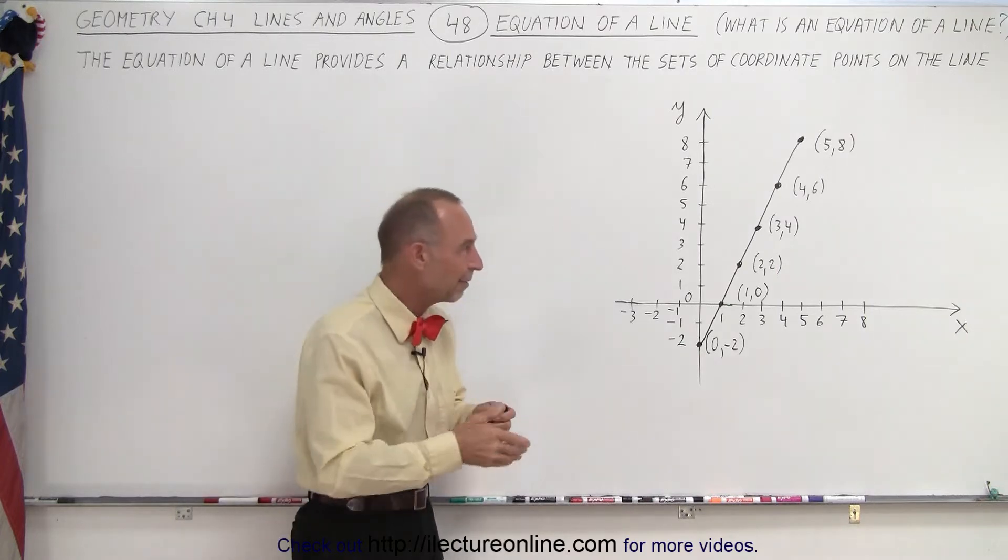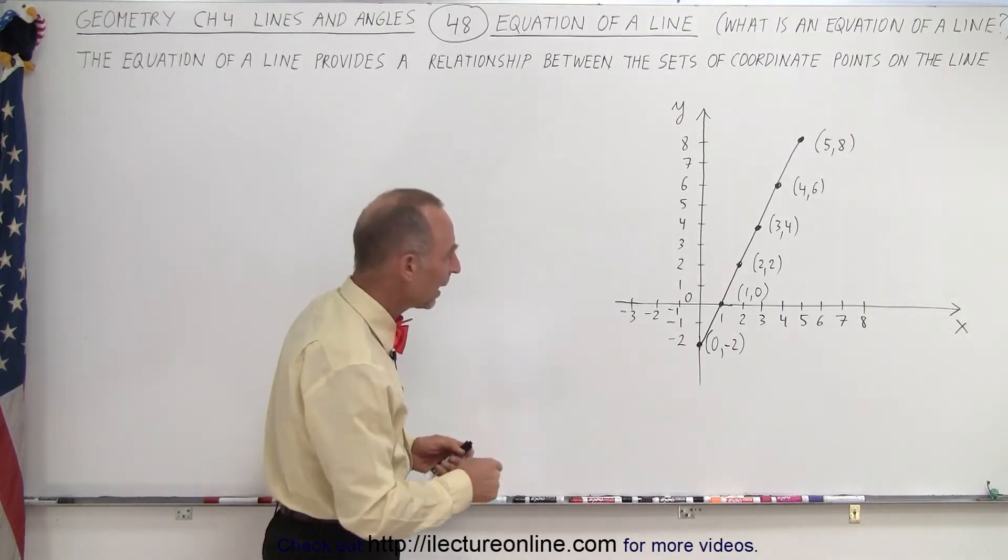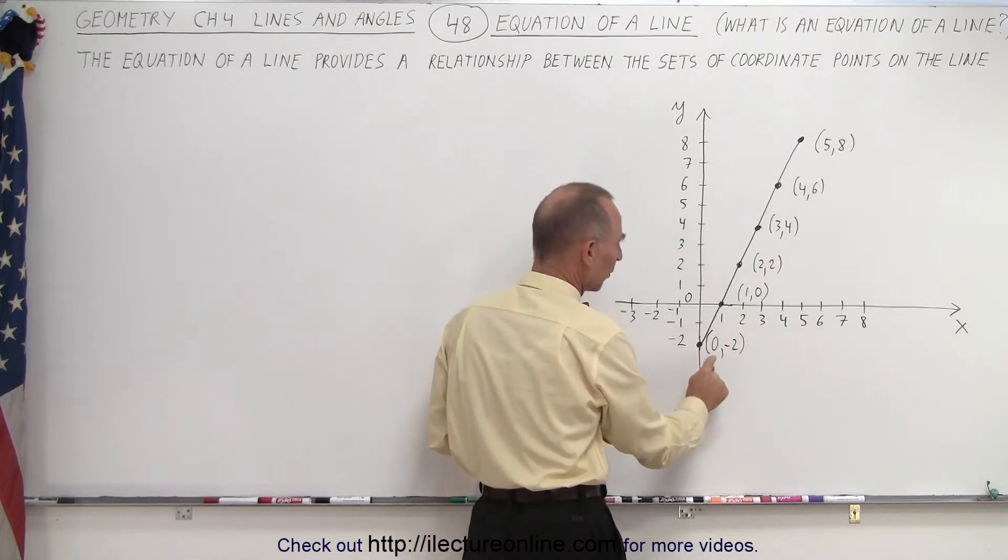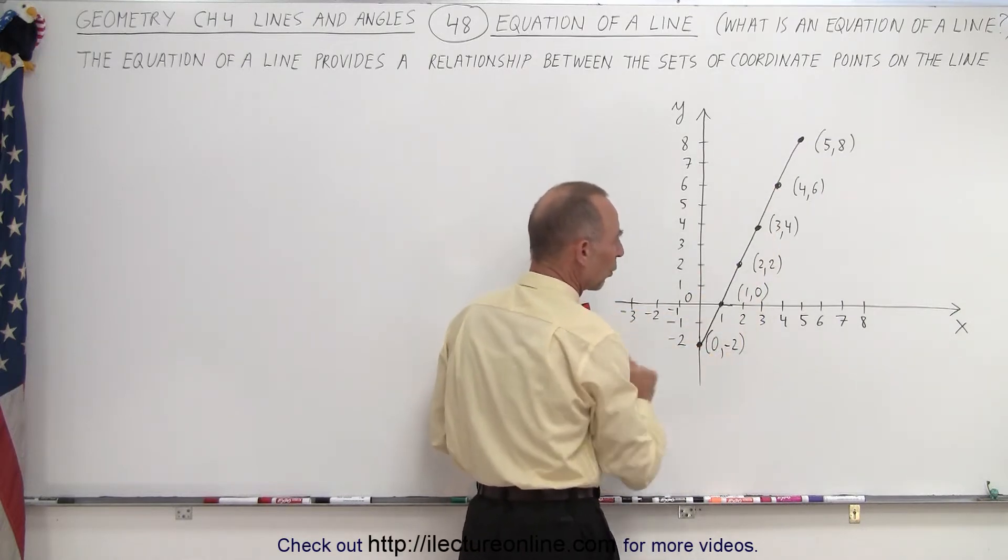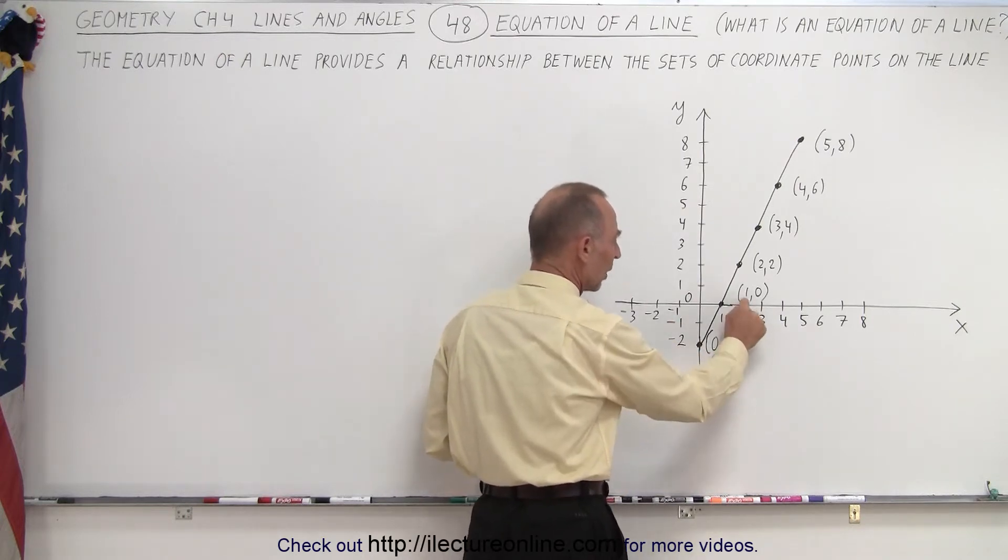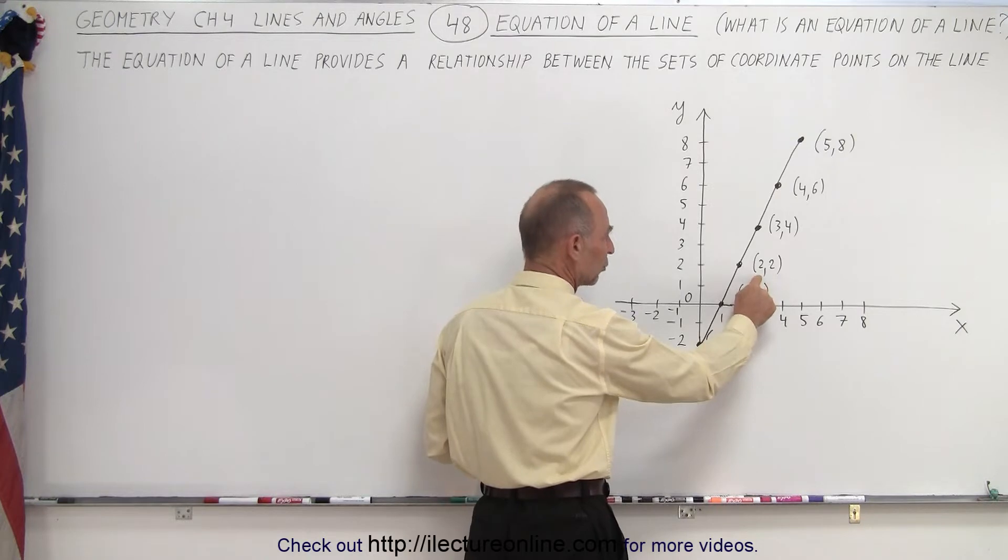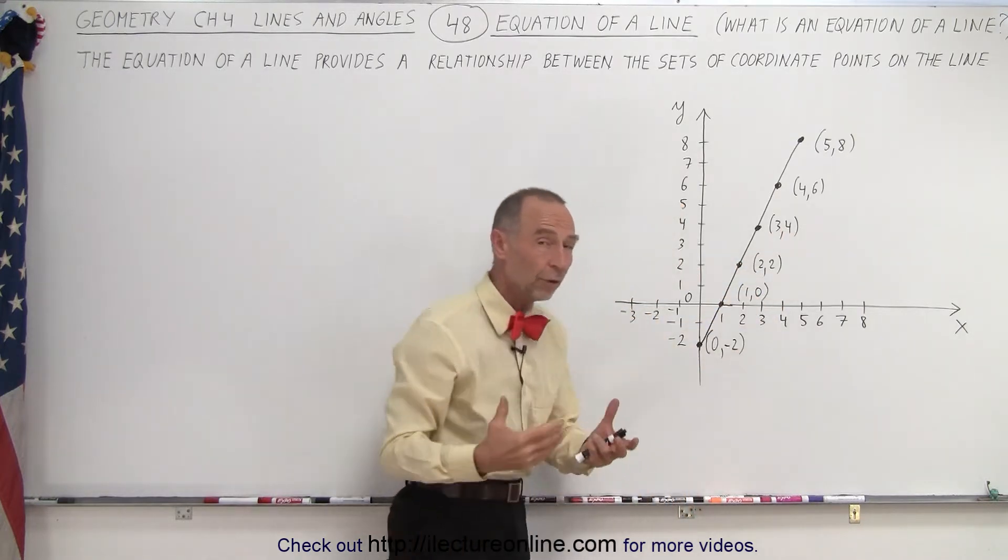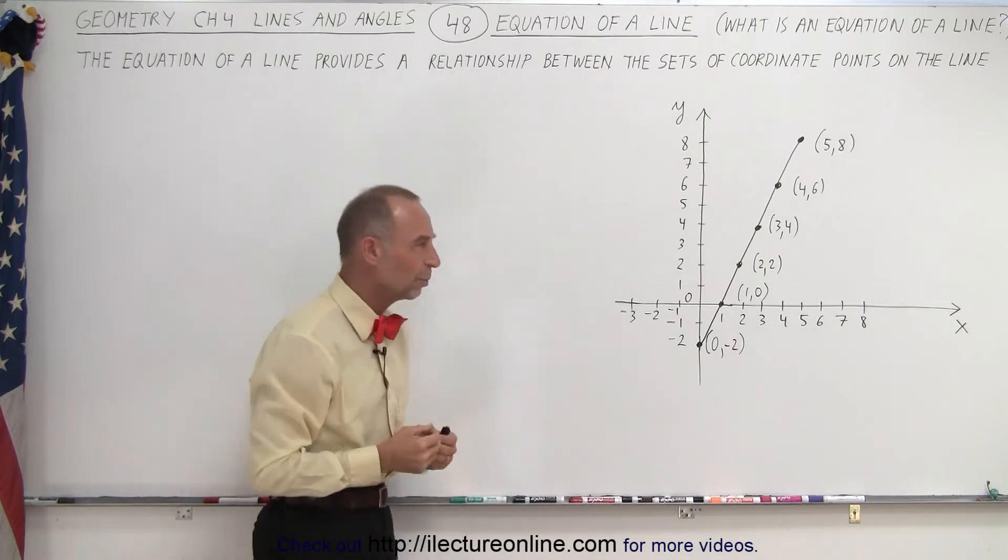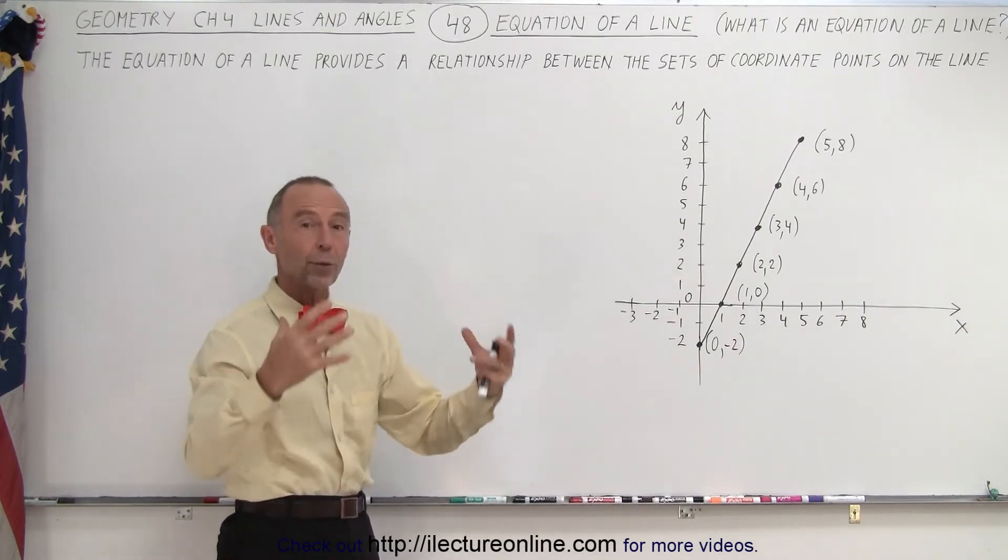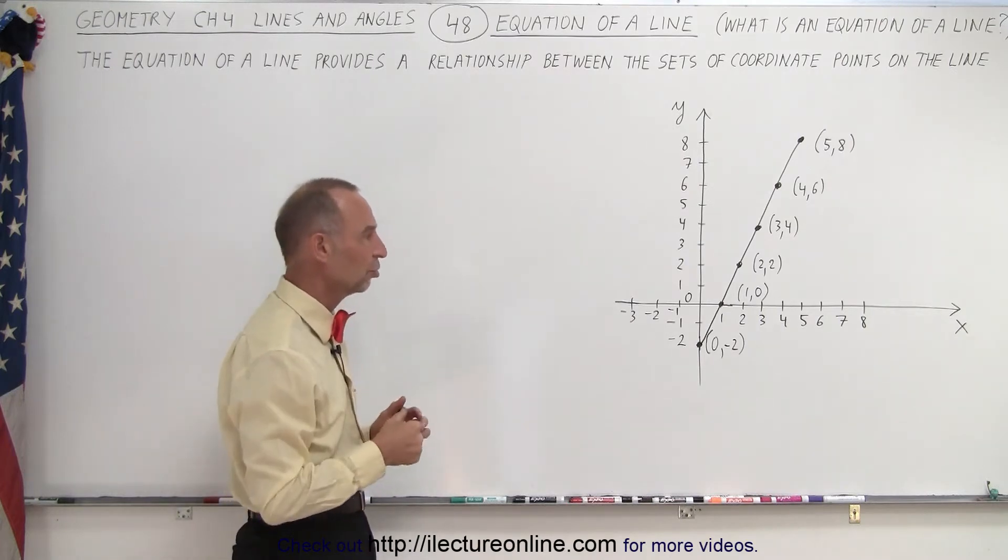So here we have an illustration of a line and we've shown some of the points on the line. Notice that each of those points has an x and a y coordinate. When x is equal to 0, y is negative 2. When x is equal to 1, y is 0. When x is equal to 2, y is 2. When x equals 3, y is 4 and so forth. So there's that relationship between them and an equation will allow us to have that in an equation format, that exact relationship.